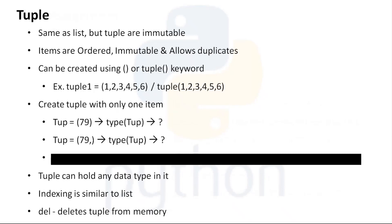The next sequence method in Python is tuple. Tuple is same as list — list and tuple are basically the same. The only difference is tuples are immutable. Once we create a tuple, we won't be able to perform anything on it. It's kind of frozen — we won't be able to add or change elements.